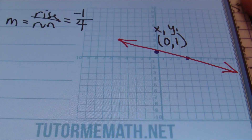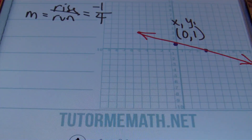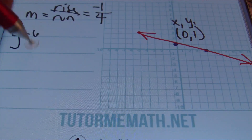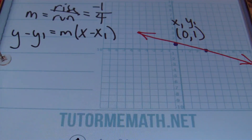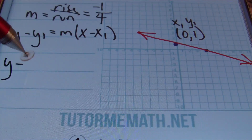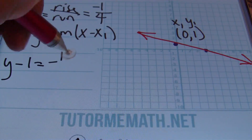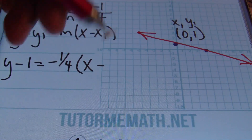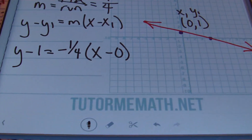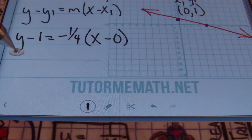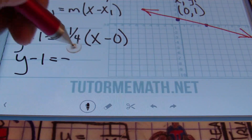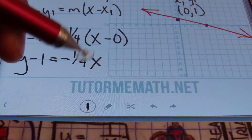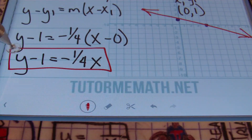Using the point-slope formula y minus y1 equals m times x minus x1, we write y minus 1 equals negative one-fourth times x minus 0. Since x minus 0 is just x, we simplify to y minus 1 equals negative one-fourth x. That is our answer in point-slope form.